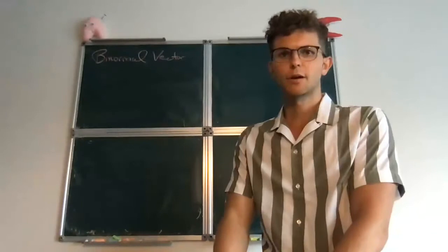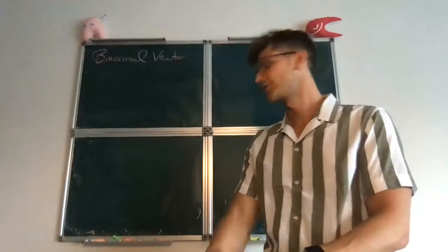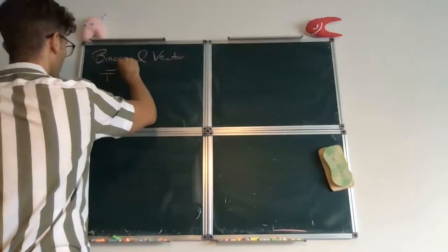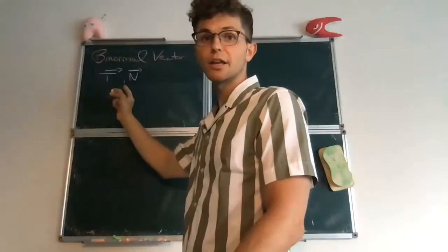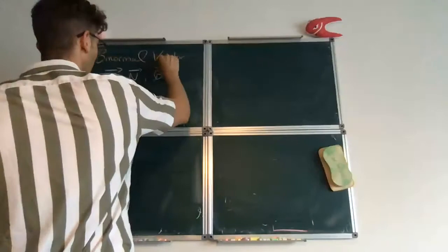Okay, so now we're going to talk about the binormal vector, which is the last one of our three analogues of the vectors i, j, and k. So far we have talked about the tangent vector, the normal vector. So this is like the version of i, this is like j, and then we need something for k, which is going to be the binormal.